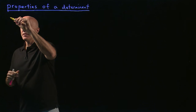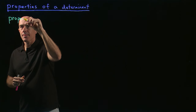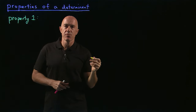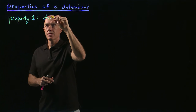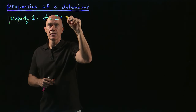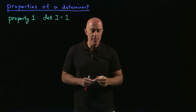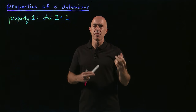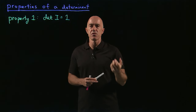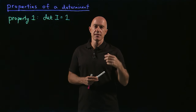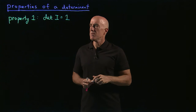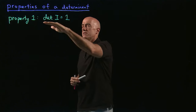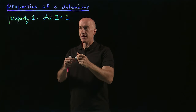Property one is a normalization property: the determinant of the identity matrix equals one. Remember that we introduced the determinant as the number from a matrix which tells us whether the matrix is invertible or not — if the determinant was zero, the matrix did not have an inverse. You can always multiply that definition by a constant, so this sets the scale: the determinant of I equals one.